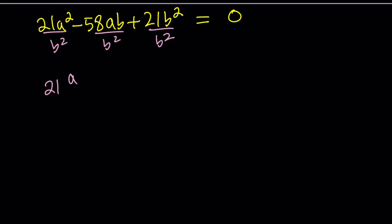Notice that b should not be 0 and it's never going to be 0 because b is 7^x. We get 21(a/b)^2 - 58(a/b) + 21 = 0.